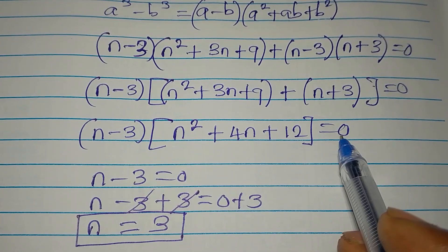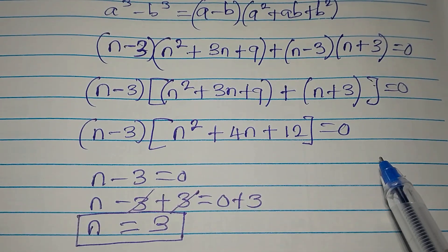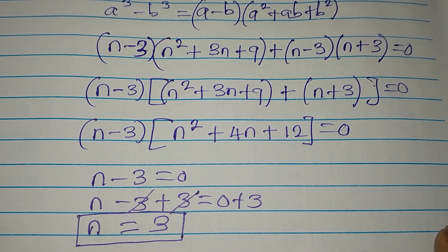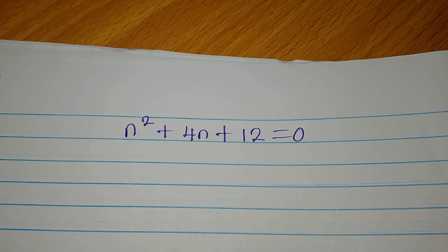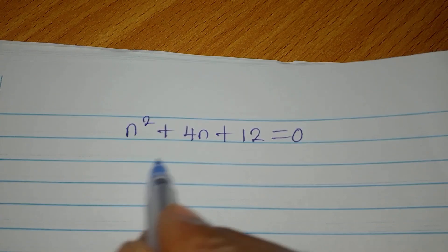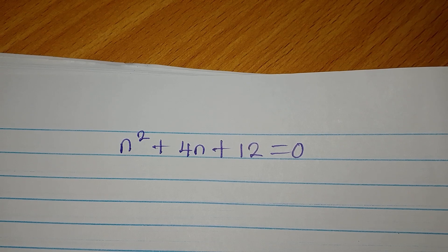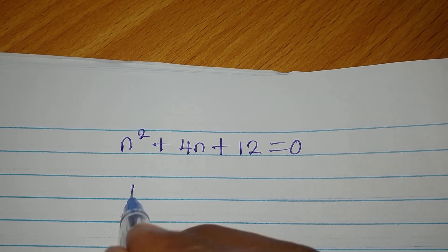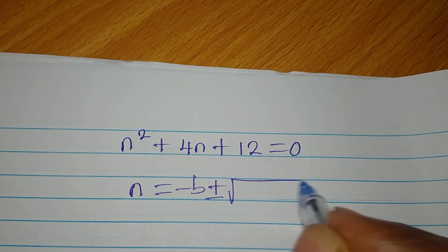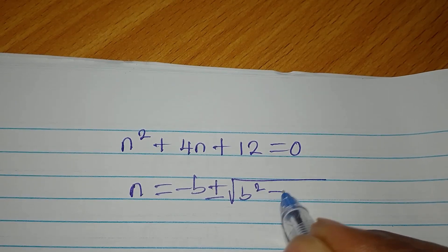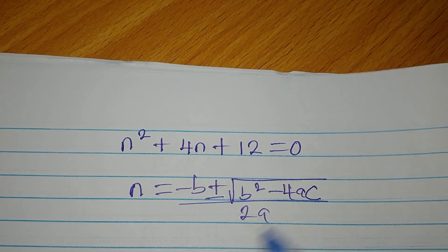Now let's go to the quadratic expression. We equate it to zero to get a quadratic equation, and we expect two more solutions. We are going to use the quadratic formula: n equals negative b plus or minus square root of b squared minus 4ac, all over 2 times a.